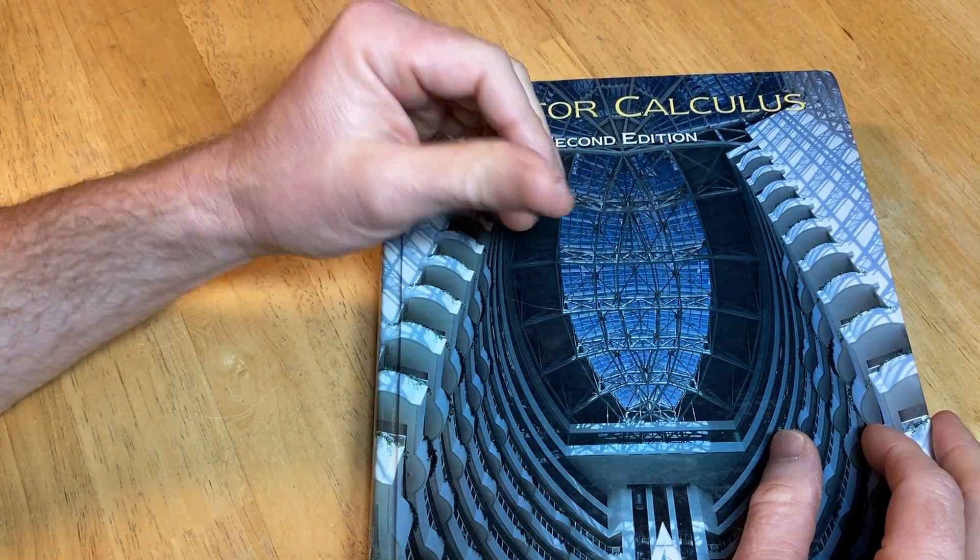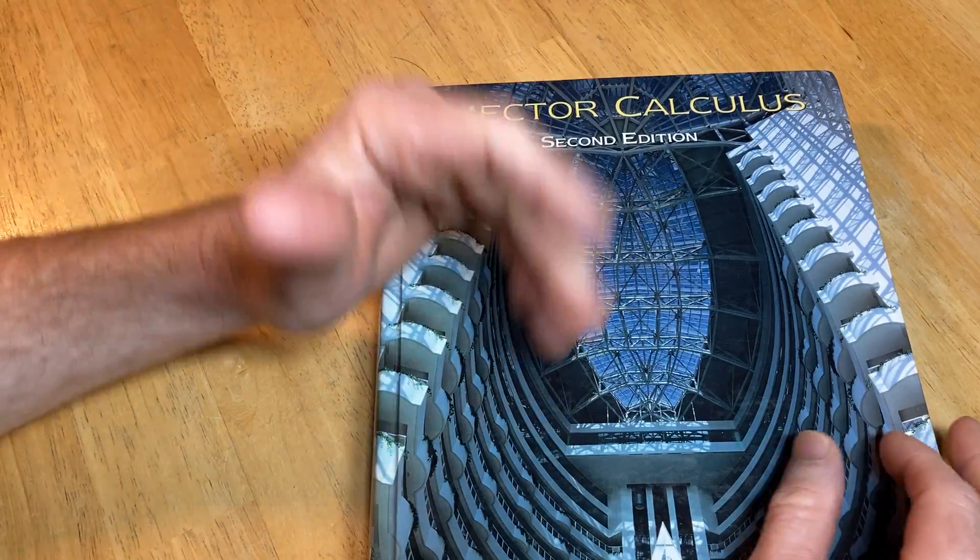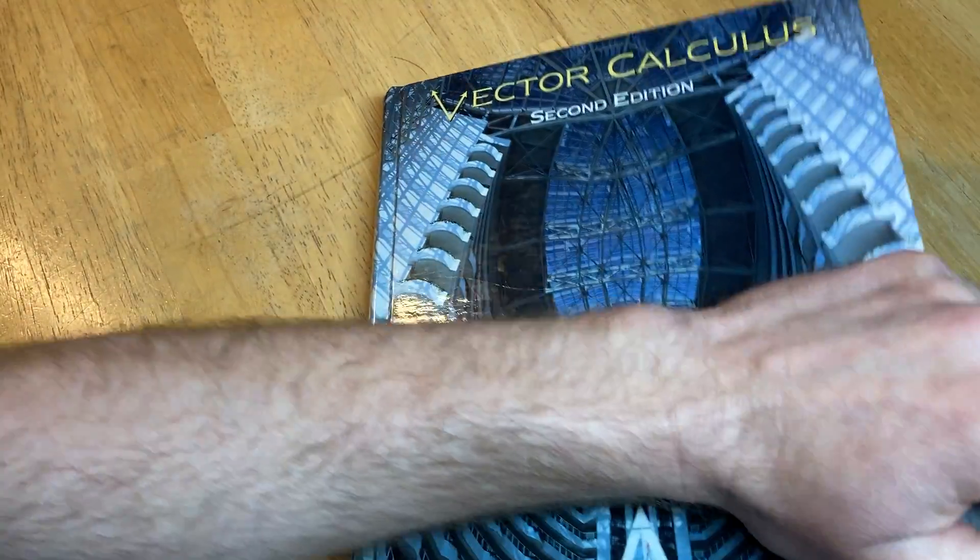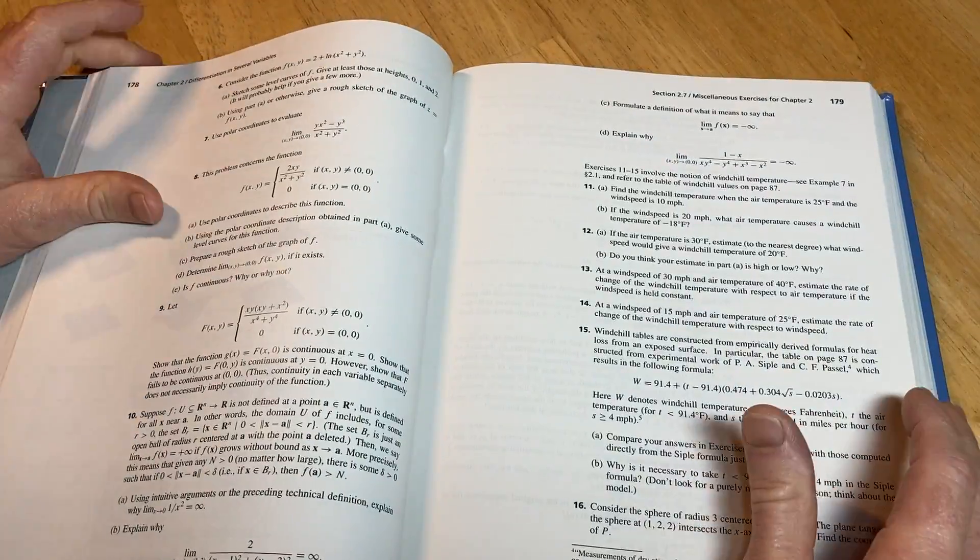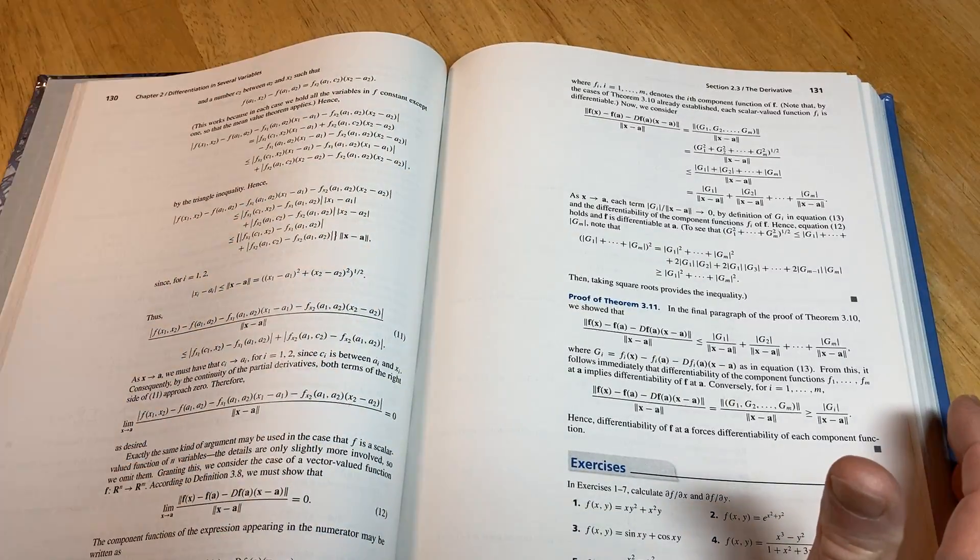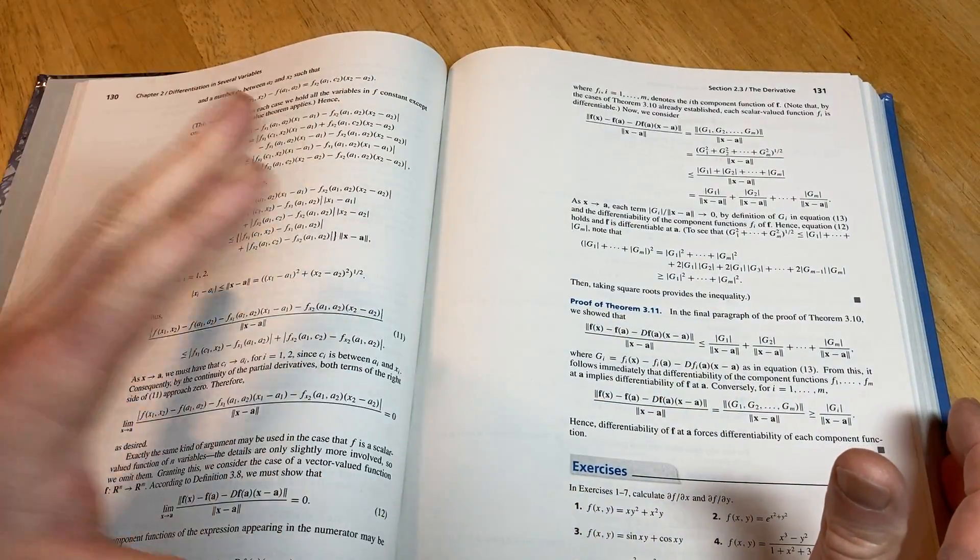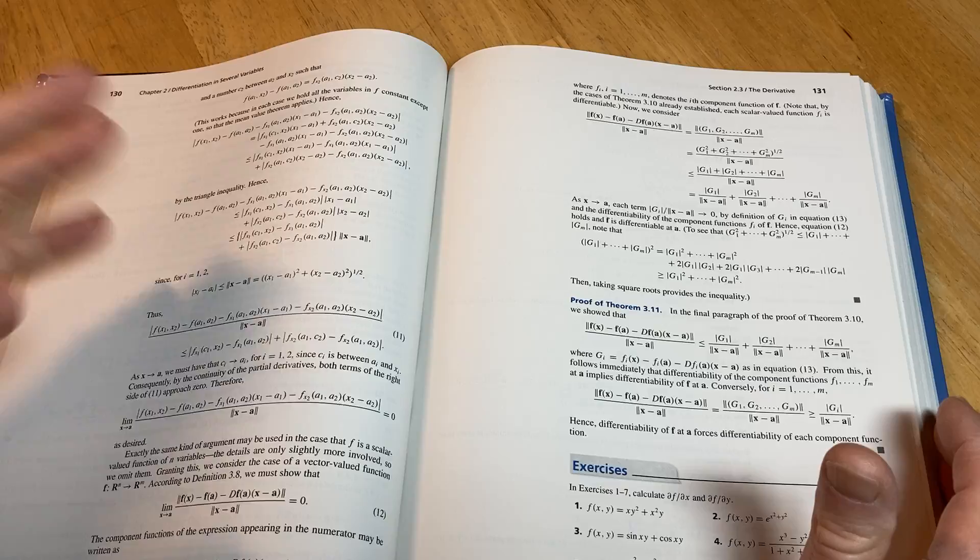So if you're a student in college and you're thinking about taking calculus 3 or you're taking it, I recommend this book. If you want to do self-study, I recommend this book. This is one of the few books out there that's modern and does a really good job of explaining vector calculus.